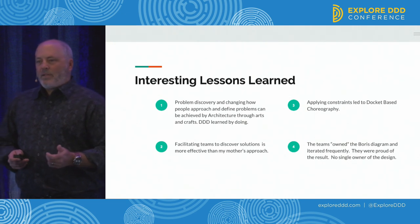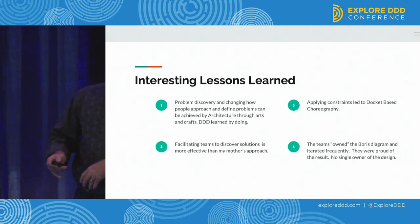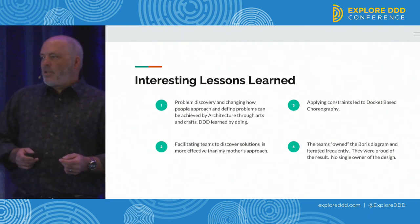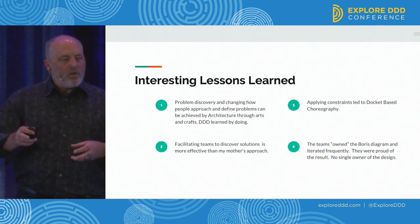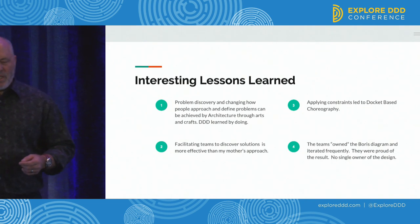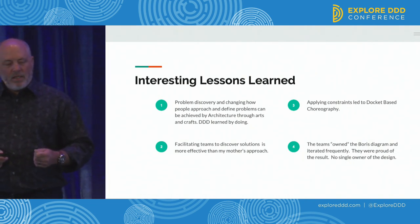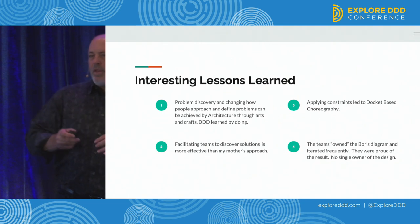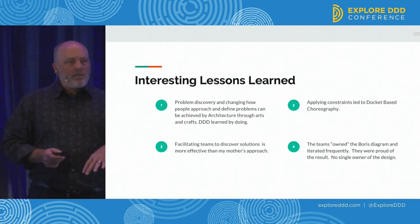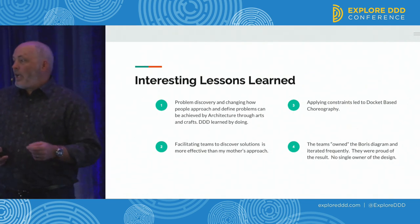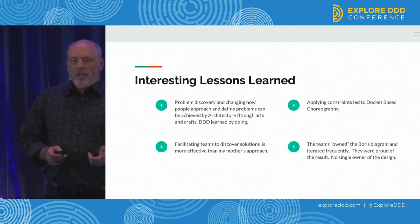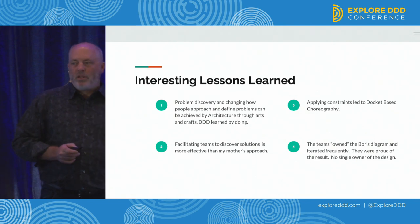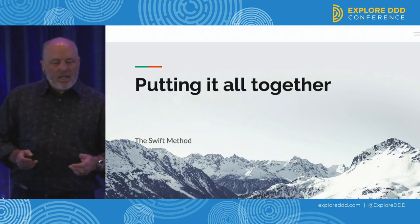Applying constraints led to 'docket-based choreography' — a different talk — but that's something this team was not ready to jump from mainframe and MQ to something like event sourcing and CQRS. There's a place in the middle that evolved called docket-based choreography, which is a really lightweight event-based way of handling state changes. Also, the teams owned the Boris diagram and iterated frequently. Once it was up on the wall it was compact enough to iterate on without another round of event storming. There was no single owner of the design — everybody contributed and owned it.